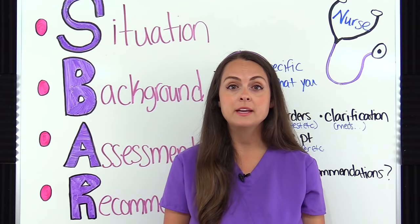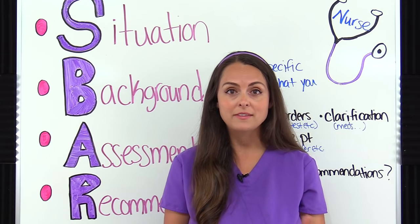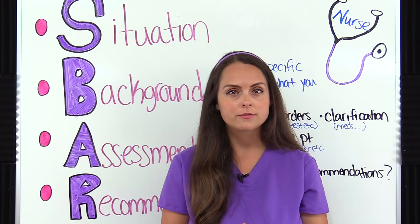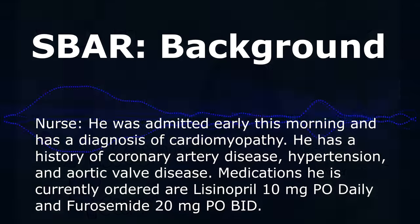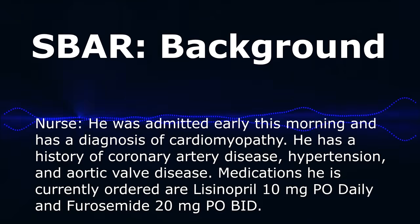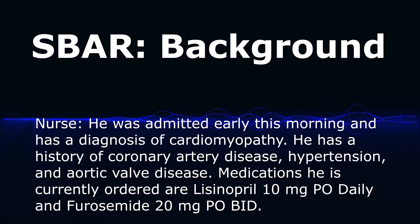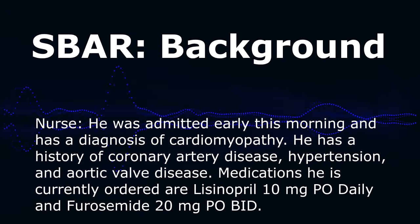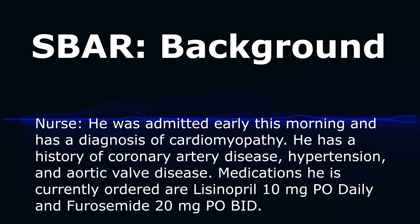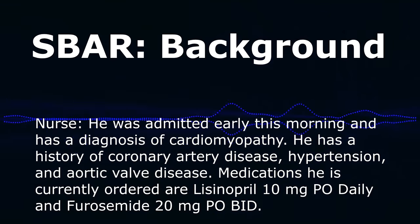Then you flip into the Background part and paint that picture for Dr. Ross about what's been going on with this patient up to this point. 'He was admitted early this morning and has a diagnosis of cardiomyopathy. He has a history of coronary artery disease, hypertension, and aortic valve disease. The medications he's currently ordered are lisinopril 10 milligrams PO daily and furosemide 20 milligrams PO BID.'